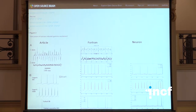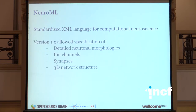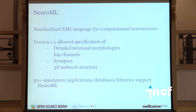Obviously, if you have five different versions of a model in different simulators, that's not necessarily best — maybe somebody fixes a bug in one. What you actually need is a common format that you can express models in, which can then be mapped to the simulators of choice. That's what's enabled by NeuroML. It's a standardised language for model descriptions in computational neuroscience. The most stable version has concentrated on detailed neuronal morphologies, ion channels, synapses, and 3D network structure — the types of multi-compartmental models traditionally built on Neuron and Genesis. Over the years, over 30 different simulators, applications, and databases have added support for NeuroML.